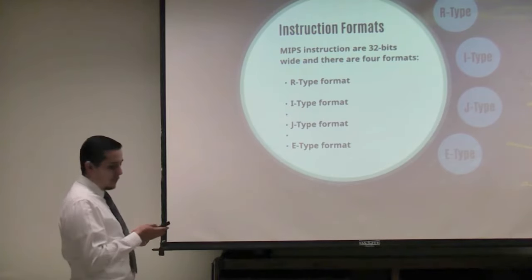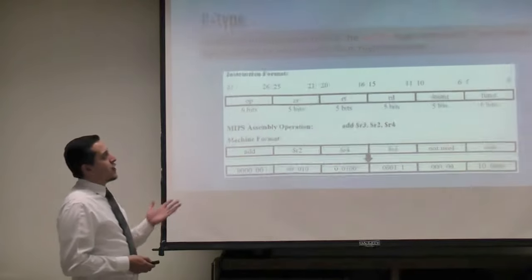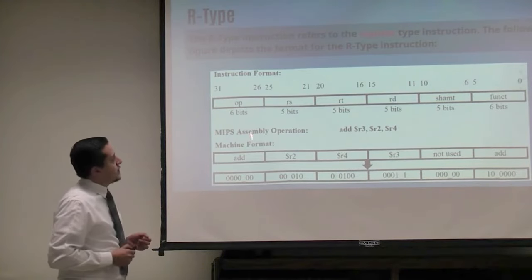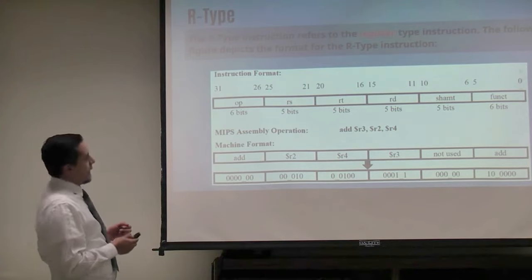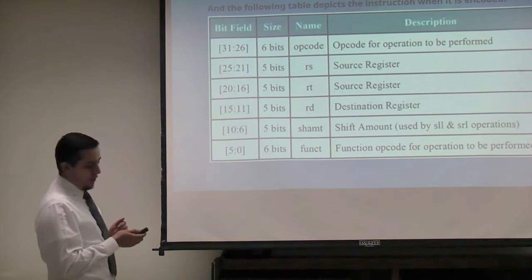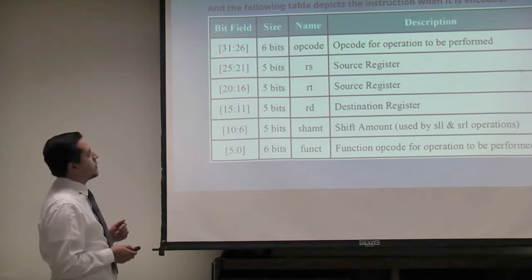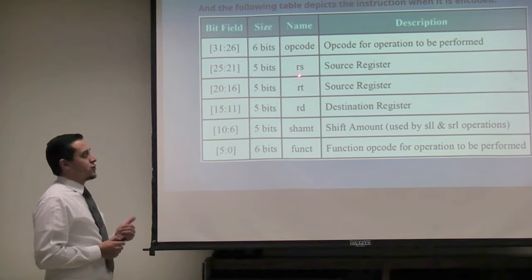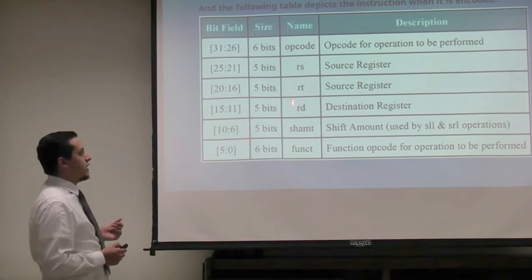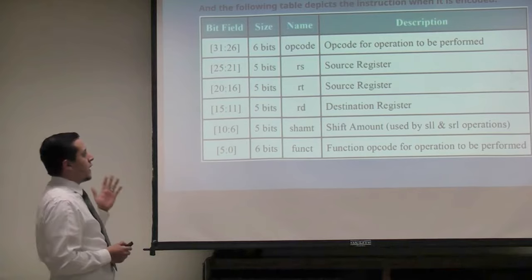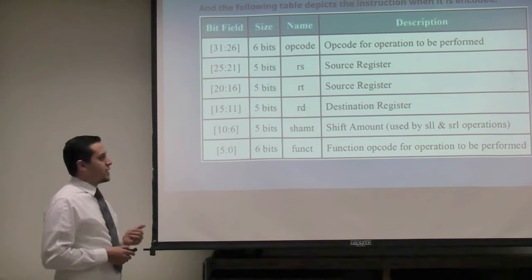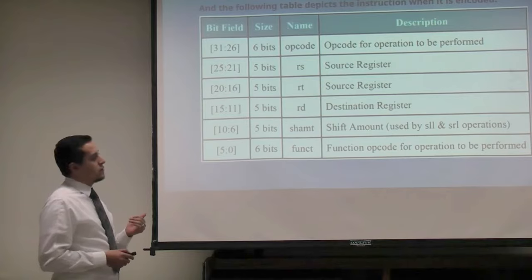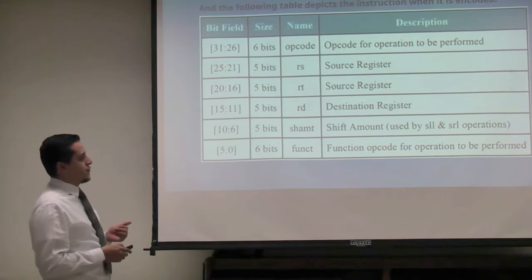And we added an E type for our enhancements. R type refers to a register set. The instruction format has 6 bits for an opcode, two register sources RS and RT, and a register destination, each one 5 bits. There is a shift amount for shift operations, and 6 bits for a function.